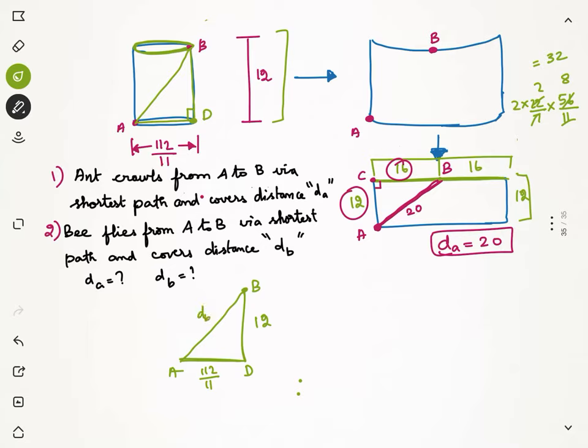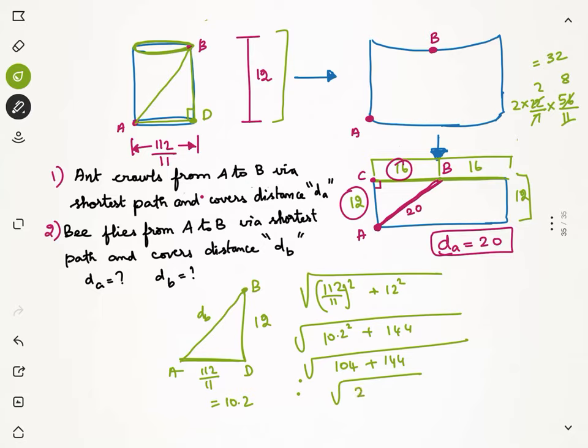This is the distance travelled by the bee. DB's length is given by square root of 112 by 11 whole square plus 12 squared. Let us assume 112 by 11 is approximately 10.2. So, square root of 10.2 squared plus 12 squared, which is square root of 10.2 squared will approximate as 104 plus 144 which is square root of 248. 225 is 15 squared, 256 is 16 squared. So, this is somewhere in between, roughly it will be some 15.6, 15.7, 15.8 in that range which is the distance travelled by our bee.